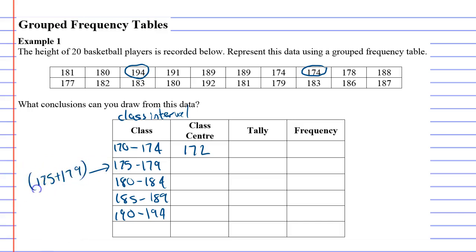That will give you 177. You can test it out if you like. Then we're going to get 182, 187, and 192. Now the class center, you're not going to really understand why we do that till a bit later on.